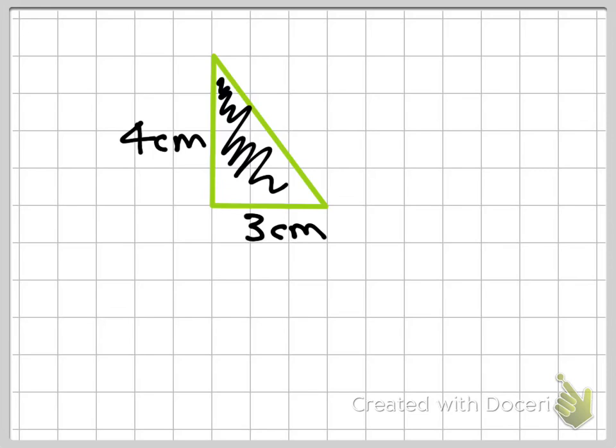Okay, and the first thing that you need to know is that a triangle is half of a rectangle. And I can show you this by drawing a dotted line here. You can see that if I had two of these right-angled triangles, I could make a rectangle.